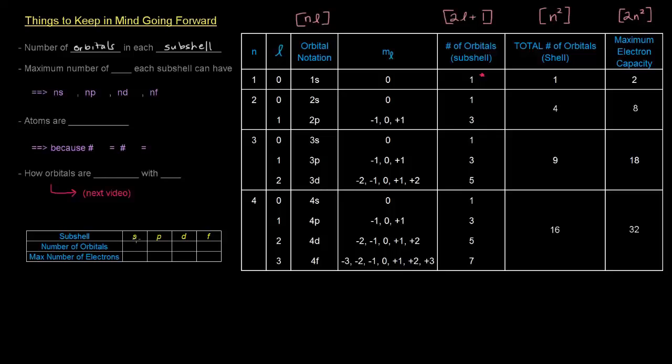And so, the number of orbitals that you have in the S subshell is 1, because there's only one M sub L value possible for an L value equal to 0. For P, if L equals 1, you have 3 possible M sub L values and 3 orbitals. And if you have D, the D subshell, an L value equal to 2, there are 5 possible M sub L values, which is 5 orbitals in the D subshell. And for F, an L value equal to 3, there are 7 possible M sub L values, so there's 7 orbitals in the F subshell.